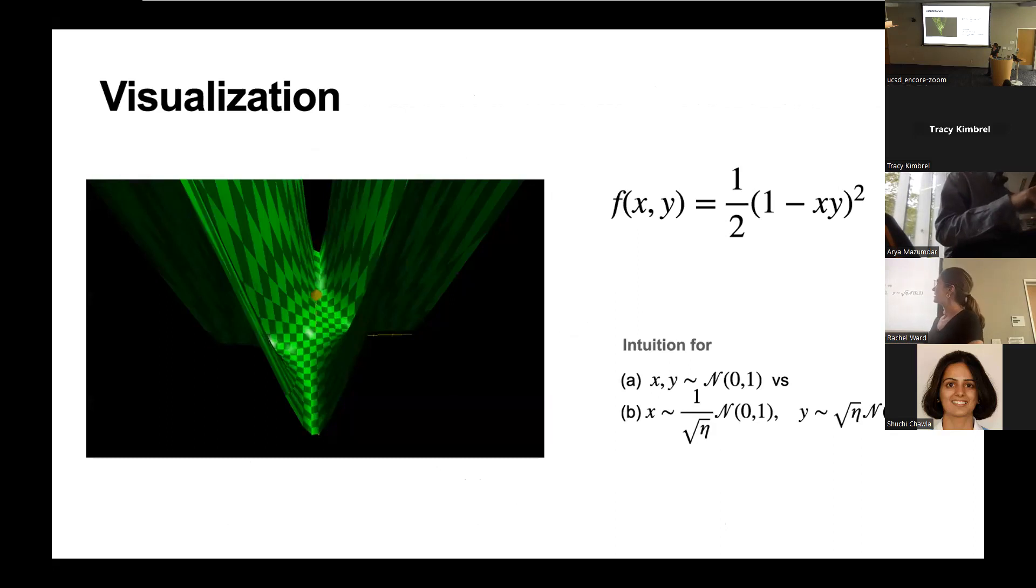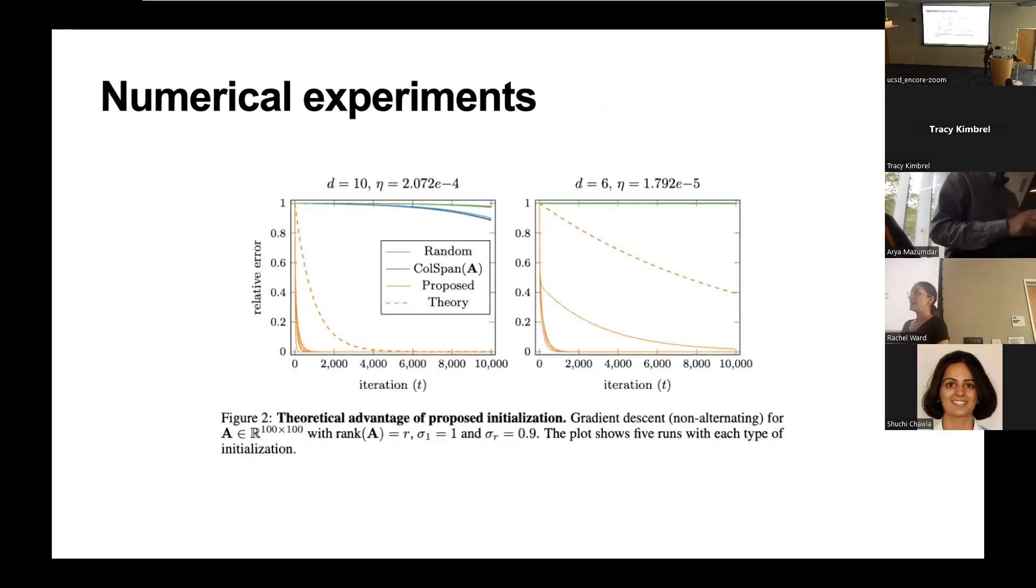The numerical experiments, I just want to mention, show that our initialization is not just a theoretical tool but really gives a completely different, dramatically improved type of convergence for this. The orange line here is the convergence showing how the loss decreases when we have this unbalanced initialization. The dotted line is our theoretical convergence rate. And the green and blue lines are the convergence rate of gradient descent from a purely random initialization or just an initialization where x is in the column span of a and y is random, but we don't do this rescaling by the square root of the step size.